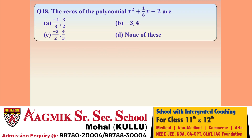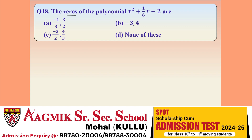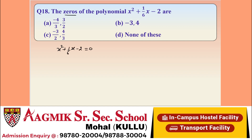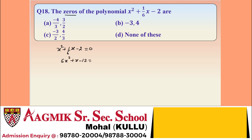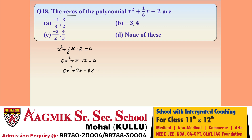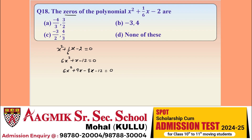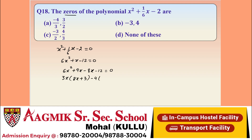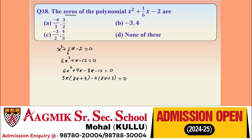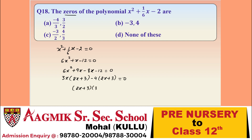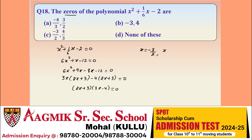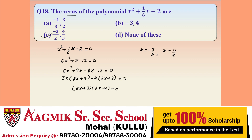Question 18: find the zeros of the given polynomial. Multiplying by 6: 6X² + X - 12 = 0. Splitting the middle term: 6X² + 9X - 8X - 12 = 0. Taking 3X common from first two terms and -4 common from last two: (2X + 3)(3X - 4) = 0. So X = -3/2 or X = 4/3. Option C is correct.